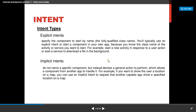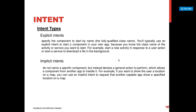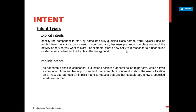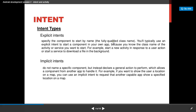As far as intent types are concerned, there are two types of intent. One is known as explicit intent, in which for example you can start a new activity in response to a user action, or start a service to download a file in the background within your own application. Implicit intent is one wherein you can declare an action and this action can allow or request another application to perform some specific task.